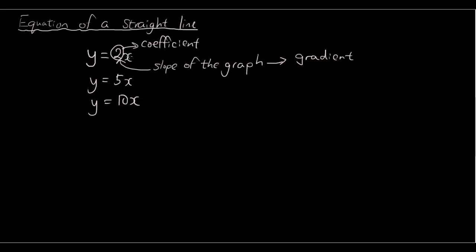The jargon that we use is gradient. So the number in front of x is called the gradient of the straight line, and we also call it m. Don't ask me why we chose the symbol m — it's like how we chose x and y from the alphabet. There is really no apparent reason; we just picked a random letter and said m is going to represent the gradient.